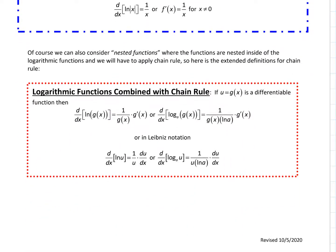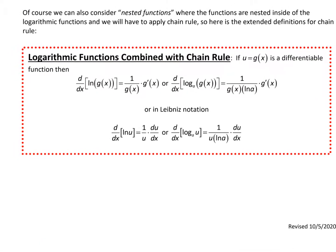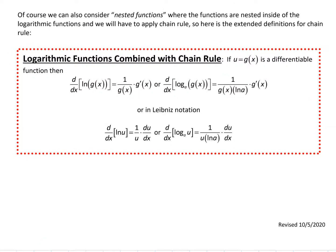Just because it's going to come up in our examples, we can combine these with the chain rule. If you're taking the natural log of a function g of x, then the result becomes 1 over g of x times g prime of x. And for log base a of a function, the derivative is going to be 1 over g of x times the constant natural log of a times g prime of x. This is just a generalization, because often we're taking the natural log of an entire function.